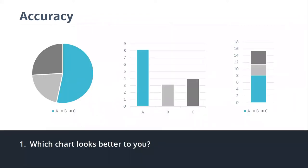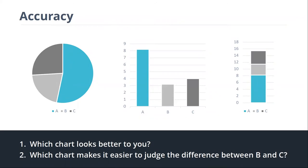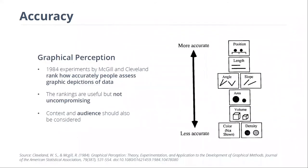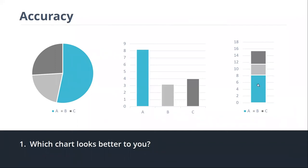Let's look at these three charts: a pie chart and two bar charts. The bar chart is a great idea because it uses length — it's easier for us to interpret the difference in length of those bars, as opposed to the angles of a pie chart. Everyone always raises their hand for the middle bar chart when asked which makes it easier to see the difference between categories B and C.